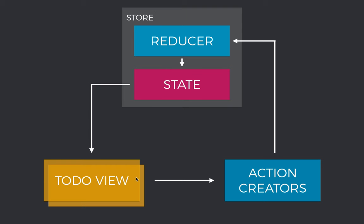We can update the view accordingly. When the view wants to change the state, it will trigger or dispatch an action. We'll use something called Action Creators to create those actual actions, which will then get dispatched. The store will receive that action and use something called a reducer to determine how the state object should be changed based on the action. So the store manages the state, allows us to subscribe to it, and we can dispatch actions to it in order to update the state.